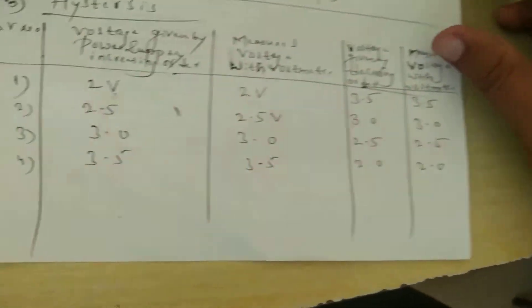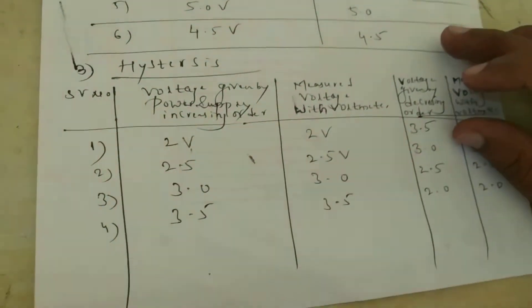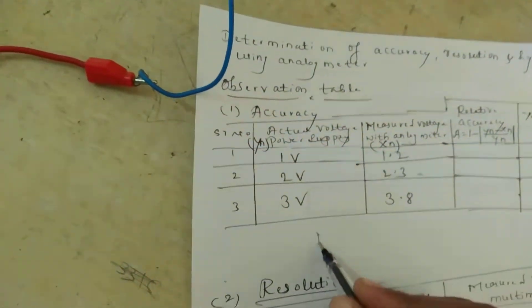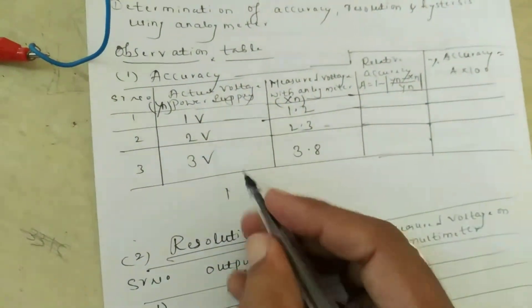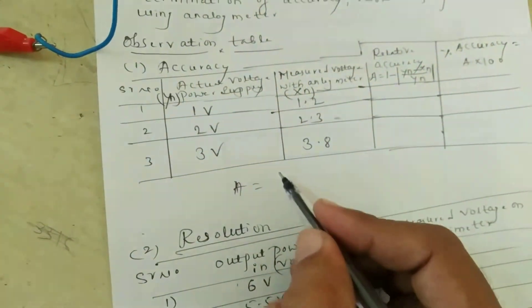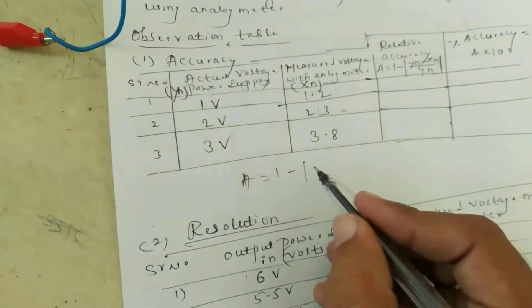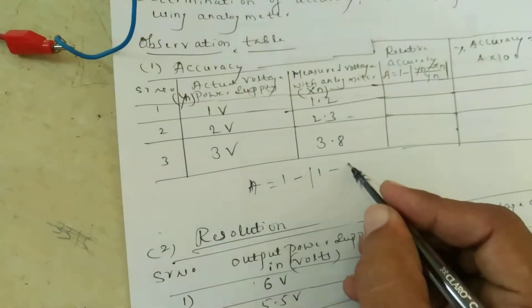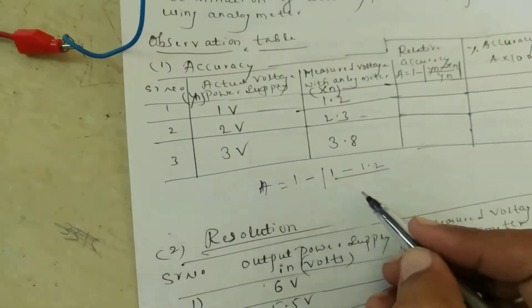Thank you for attending the session. Now we will calculate some values. The first value: A is equal to 1 minus yn, where yn is 1, minus xn which is 1.2, divided by yn which is 1.